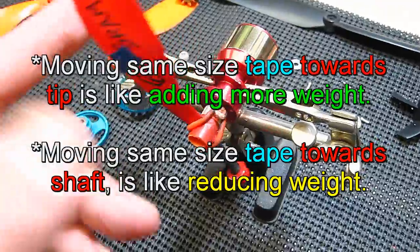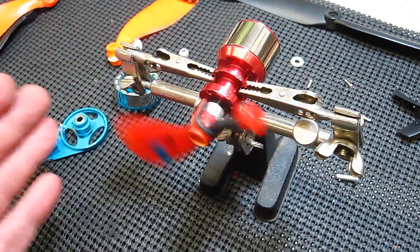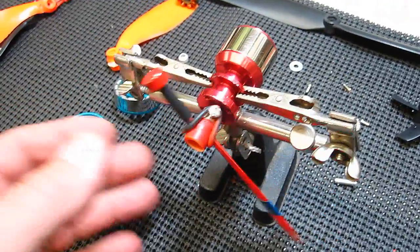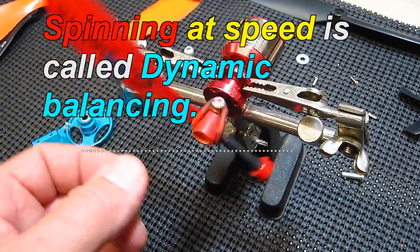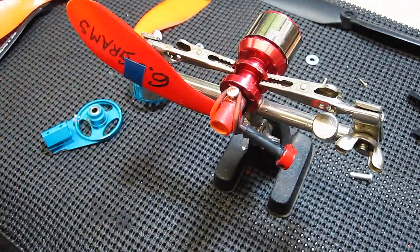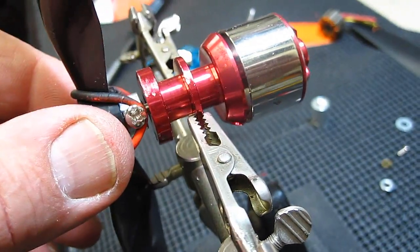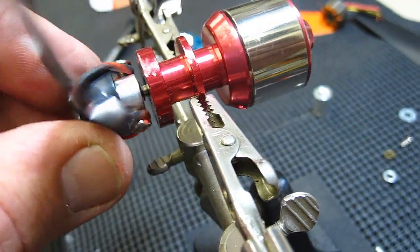This is called static balancing. Once you get it close, you need to spin it on the actual motor and just add tape to get rid of the vibration. See, by leaving a little slop in here, there's absolutely no friction either, only the bearings.